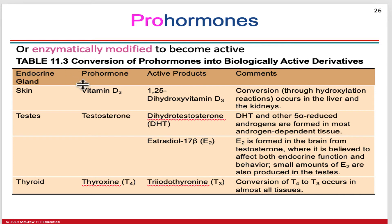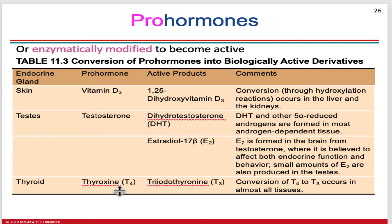Several pro-hormones are listed in this table. Vitamin D3 is not the active form of vitamin D — it has to be converted to 1,25-dihydroxy vitamin D3. Testosterone is not the active form; it's a pro-hormone that has to be converted to DHT. And thyroxine, T4, is not the active form of thyroid hormone — it has to be converted to T3. Keep these in mind, as these are very important information tables.